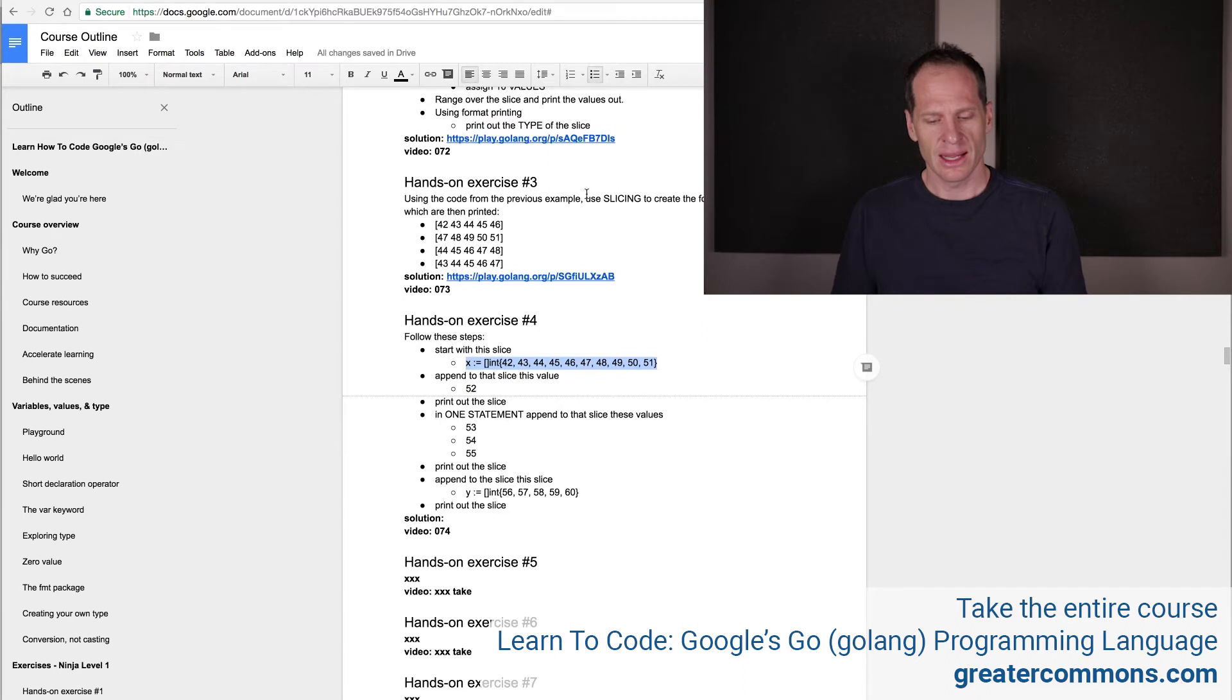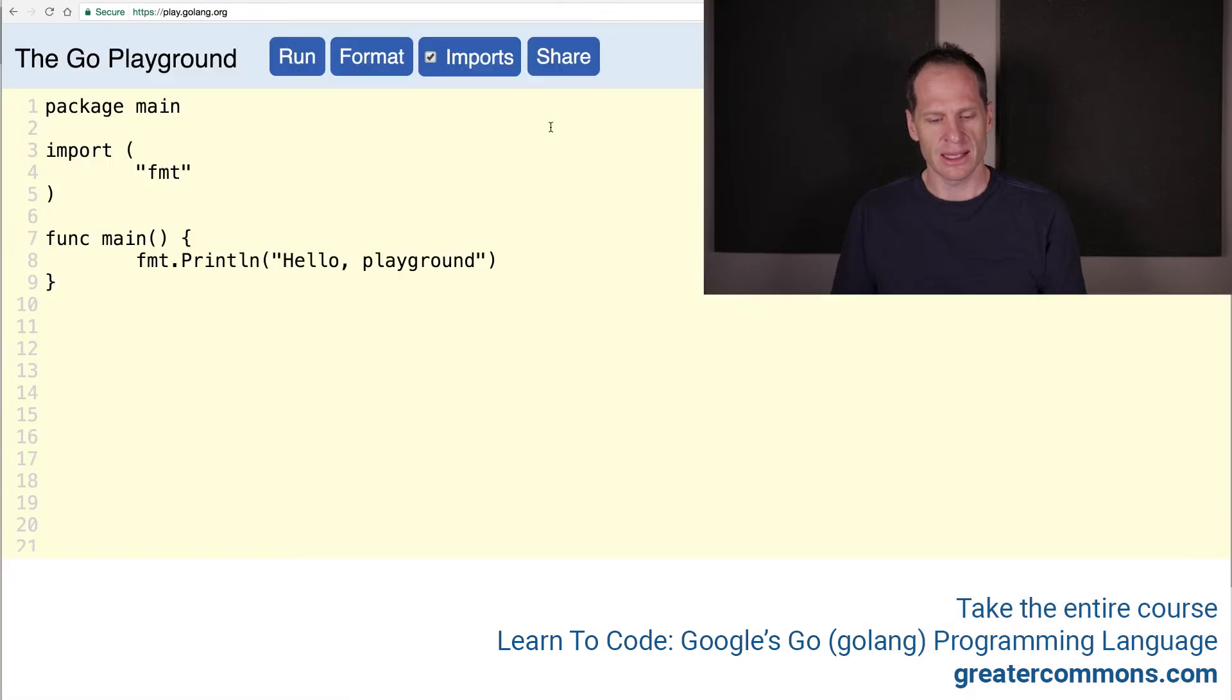So here's the solution. I get that first line right there and that's the slice I'm starting with. And I'm going to just get a print statement. There we go. That's easy. And I'm going to put that slice right there. And I'm going to append to that slice, X is equal to append to X. The value I'm going to append is 52. And I'm going to print out X.